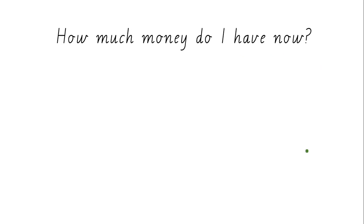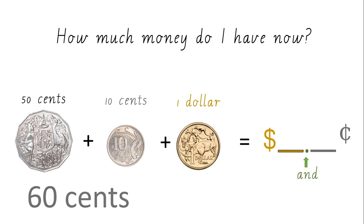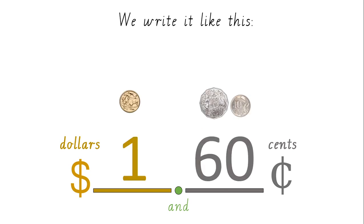How much money do I have now, boys and girls? I have 50 cents, 10 cents, and a one dollar coin. I'm going to start by adding all of my cent coins together first to see if I can make any more dollars. 50 cents plus 10 cents equals 60 cents. I also have one dollar. This means in total I have one dollar and 60 cents.